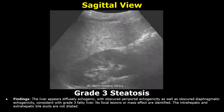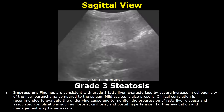These are the findings of a grade three fatty liver. There will be obscured periportal echogenicity as well as obscured diaphragmatic echogenicity, consistent with grade three fatty liver. In the impression, write that findings are consistent with grade three fatty liver and mention the severe increase in echogenicity. In most cases, mild ascites is also present. Then write about clinical correlation.